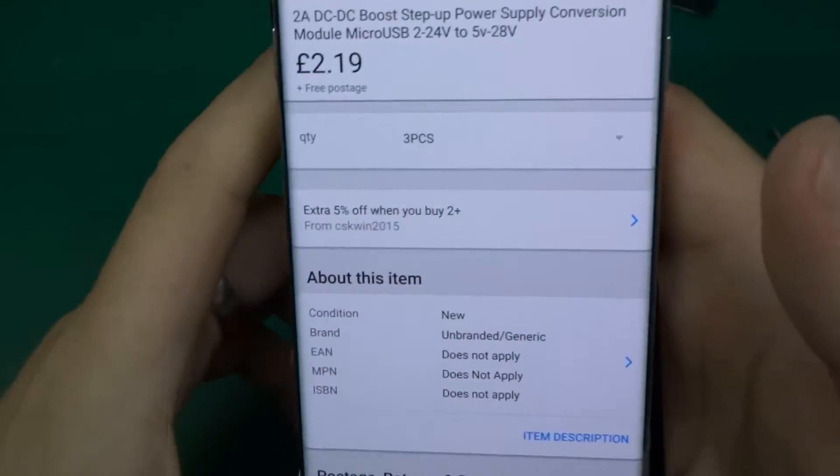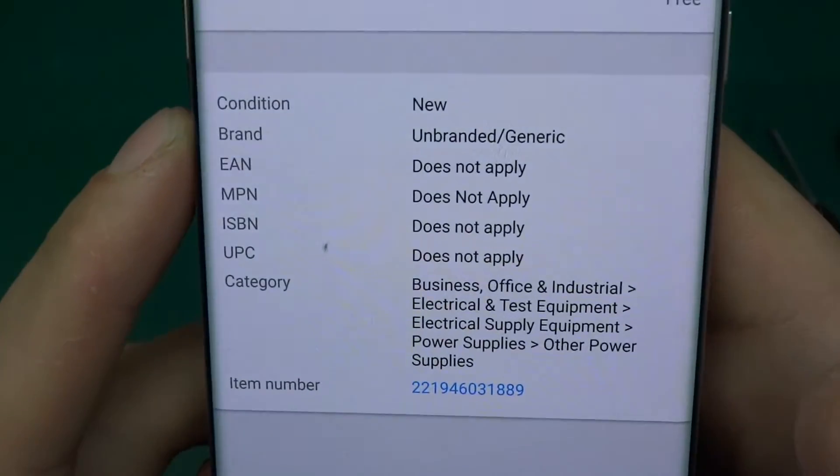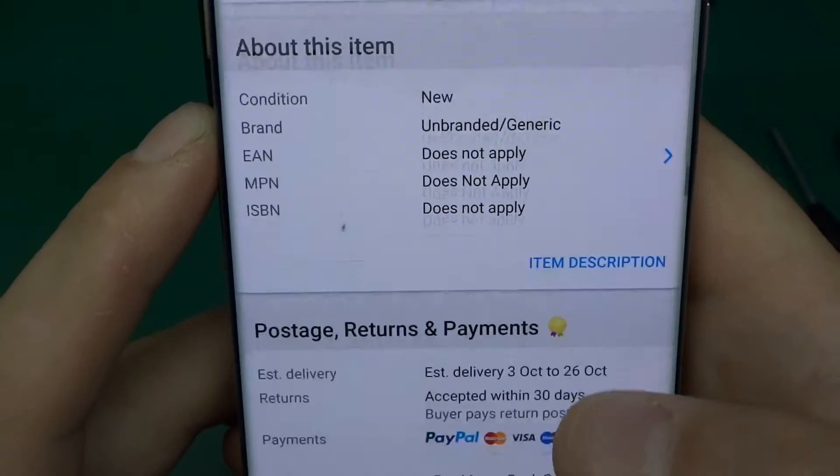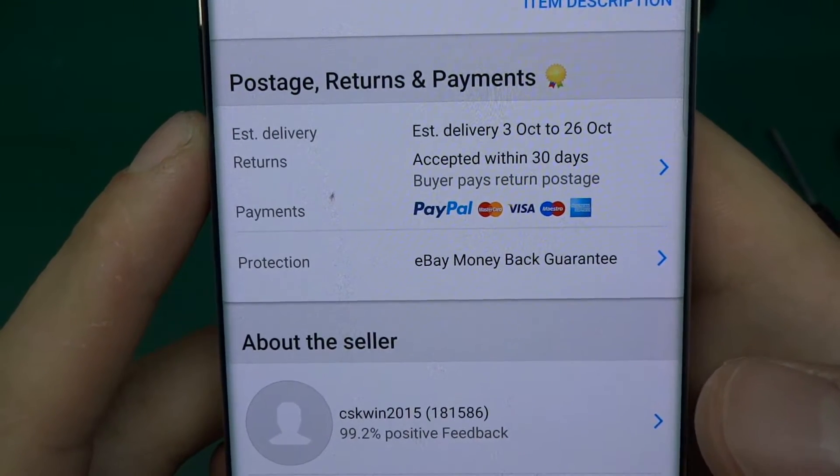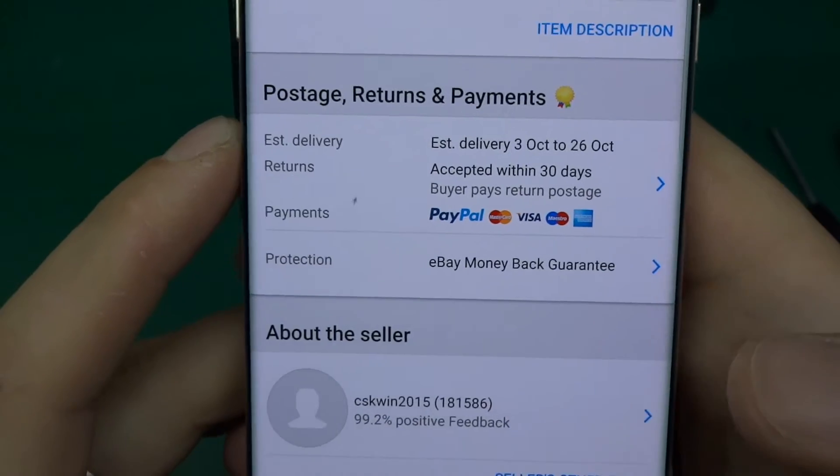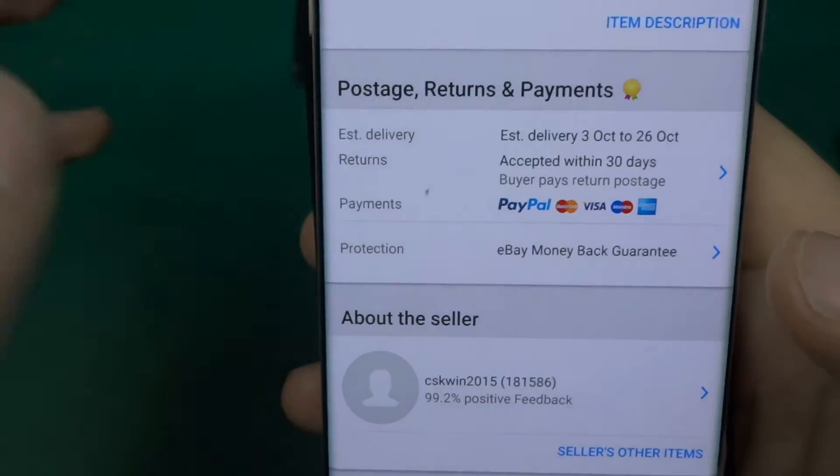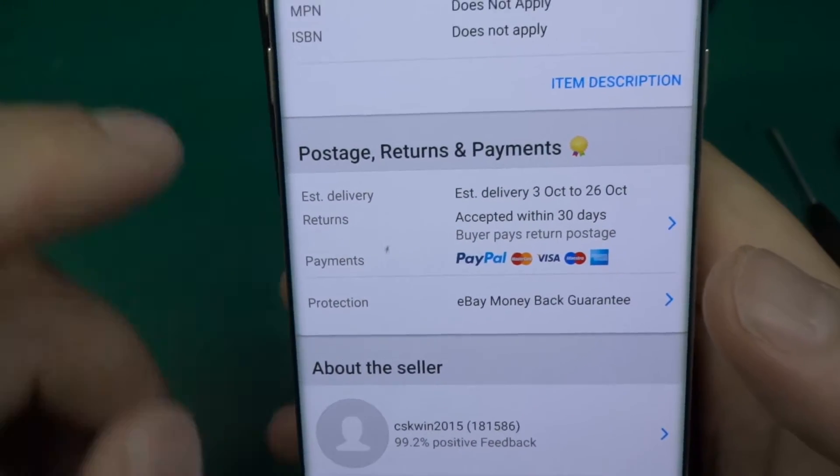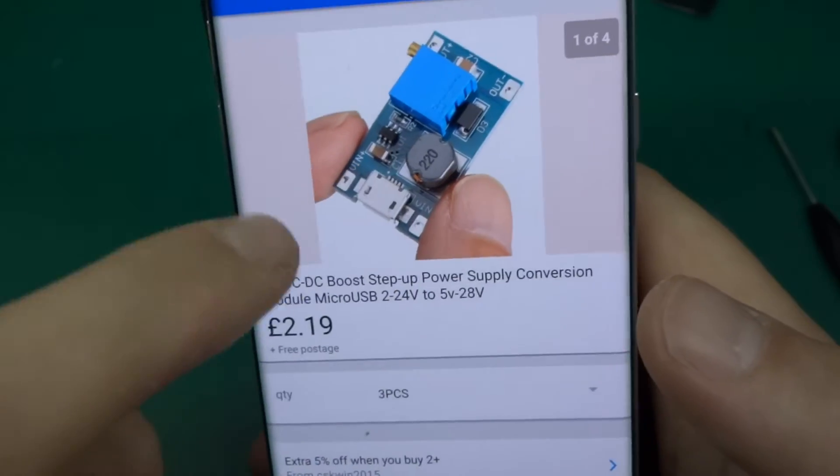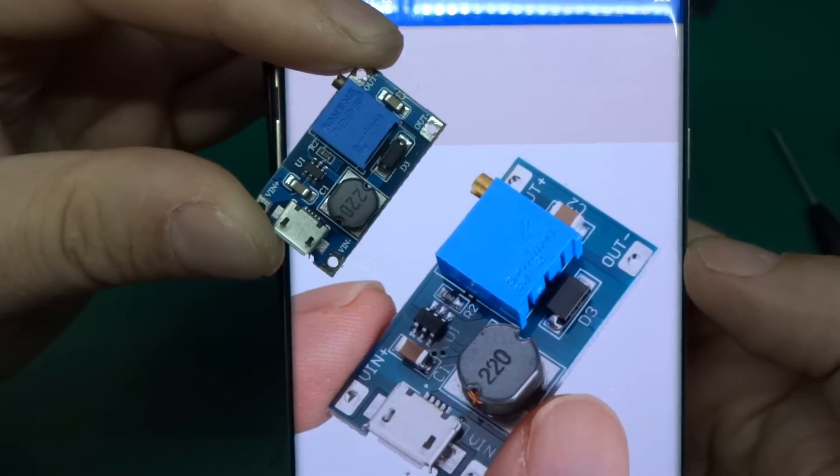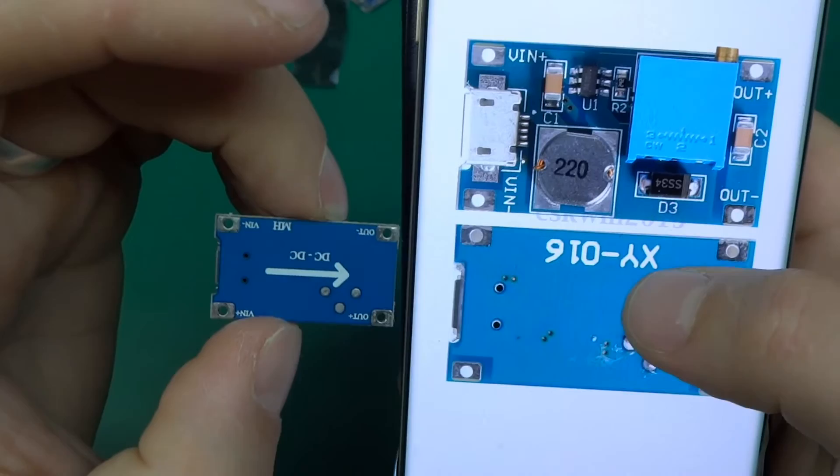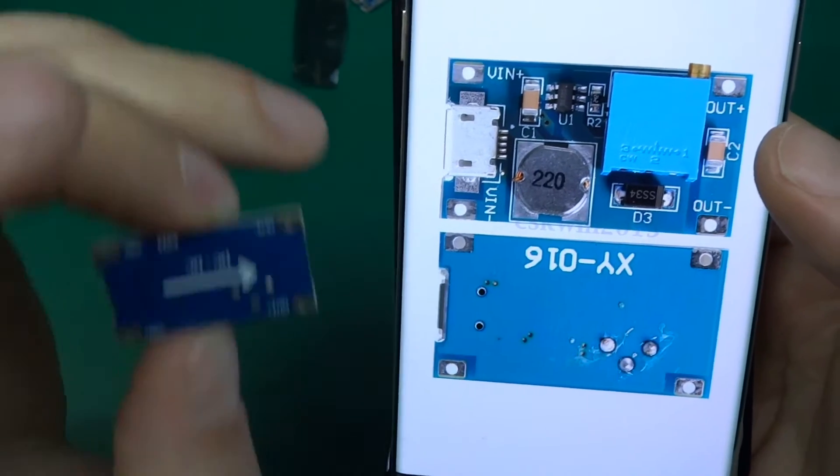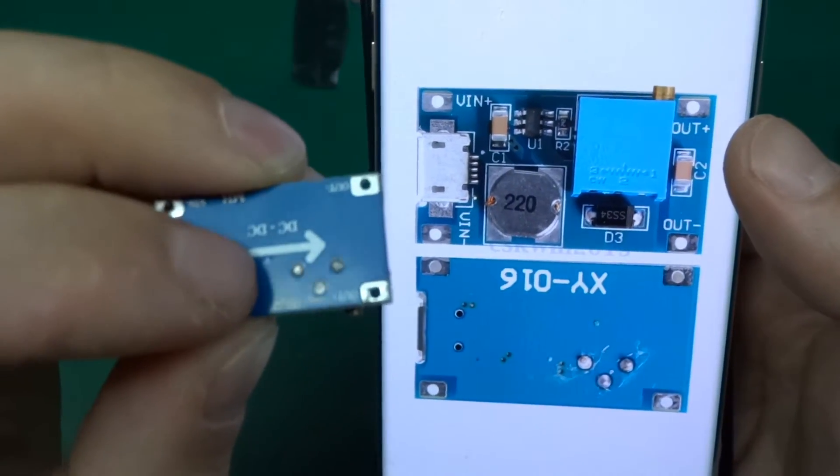So let's go back to eBay. By the way, the item number is 221946031889 and this came from seller CSK win 2015, 99.2% positive feedback. I'm quite sure it's not the seller, he's probably got a batch of dud modules. Let's look at the pictures - it looks kind of the same, more or less. It hasn't got the XY 016 marking on the back, there's quite a few more vias on this one.